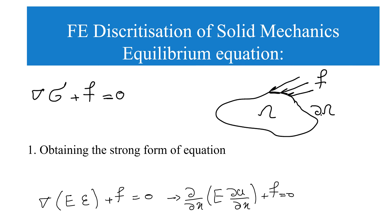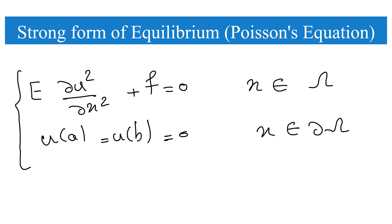We insert Hooke's law into the equilibrium equation as the constitutive law, where sigma equals E (Young's modulus) multiplied by epsilon (strain). For a one-dimensional problem along x, the gradient changes to d/dx, and epsilon becomes du/dx. If we consider elastic modulus E as constant, it can be taken outside the derivative, giving us the second derivative of displacement. The strong form becomes: E times the second derivative of u with respect to x, plus f, equals zero on the domain omega.